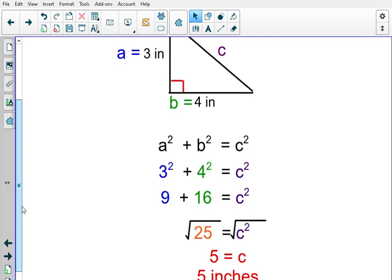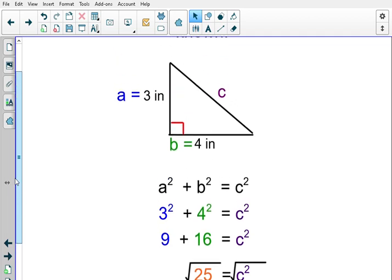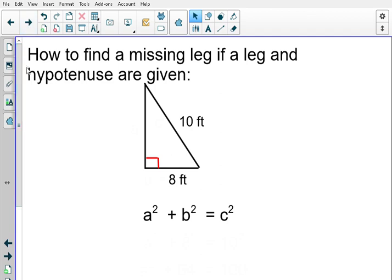Now, that was an example of when the hypotenuse is missing, that we were given the two legs and the hypotenuse was missing. Our next example, we're going to find a missing leg, and in this case, they've given us the hypotenuse, and they've given us a leg.